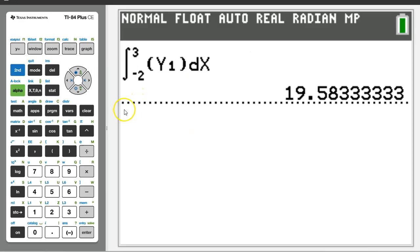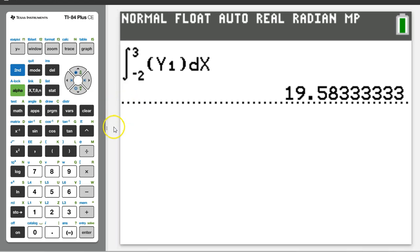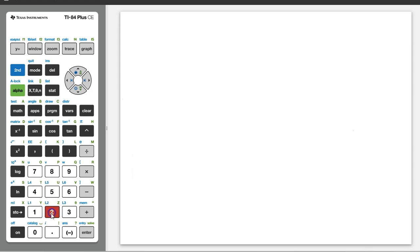Always reset your calculator at the beginning of an assessment by hitting 2nd plus 7, 1, 2. That's 2nd plus 7, 1, 2.